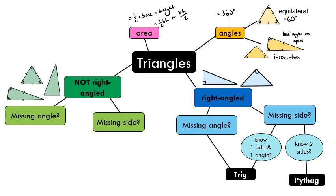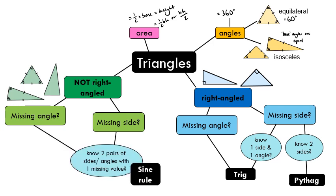Returning to the mind map from the start of the lesson: we can now fill in the sine rule section. It allows us to find missing angles or missing sides when we know two pairs of sides and angles with one missing value. It works for both non-right-angle triangles and right-angle triangles. That's the end of the main lesson — there's an optional extension on the next slide.